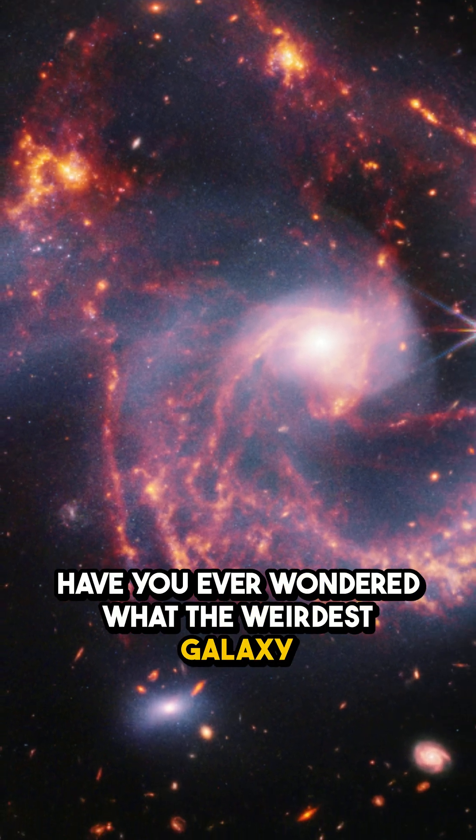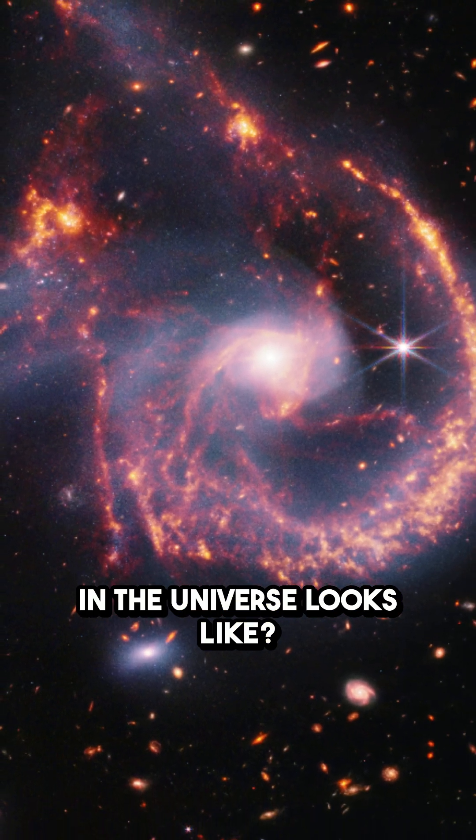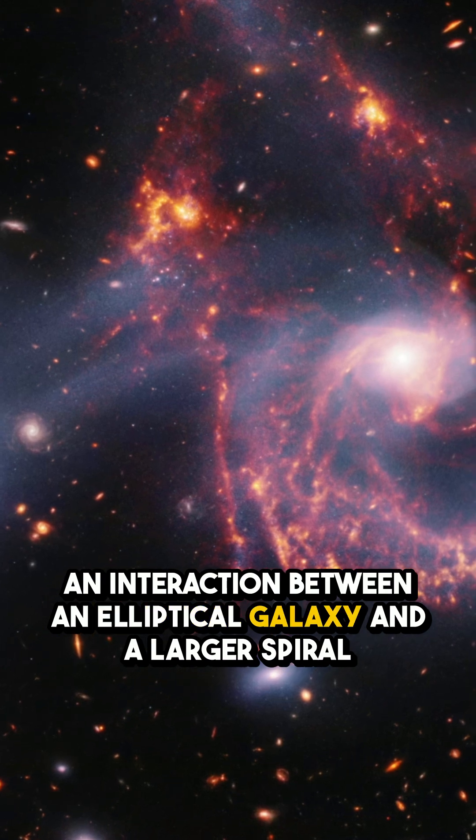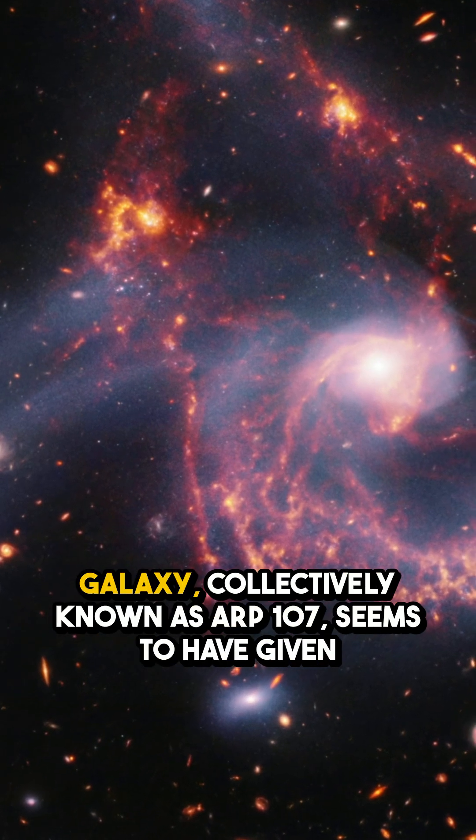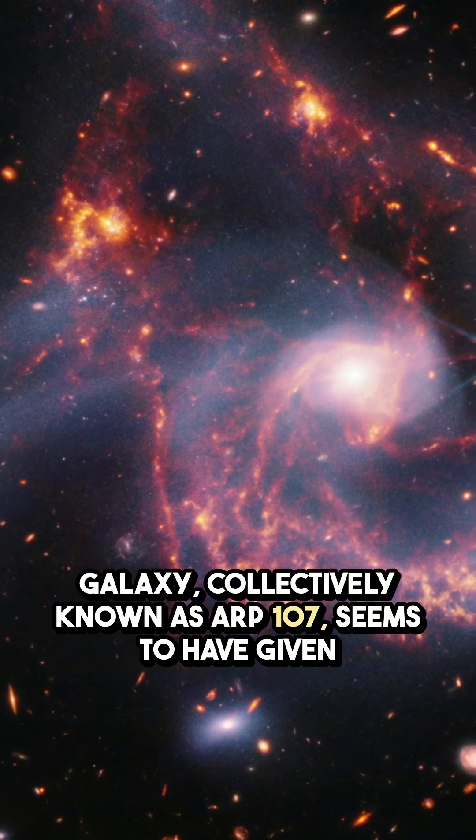Have you ever wondered what the weirdest galaxy in the universe looks like? An interaction between an elliptical galaxy and a larger spiral galaxy, collectively known as ARP-107,